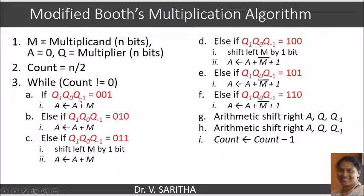So if q1, q0, q-1 is equal to 001, then we are performing addition, that is the multiplicand is being added to the partial product.